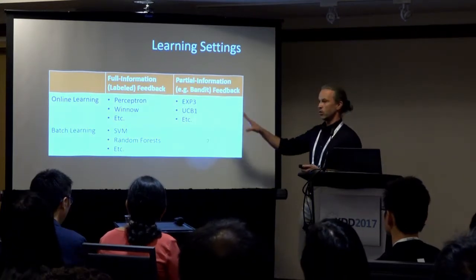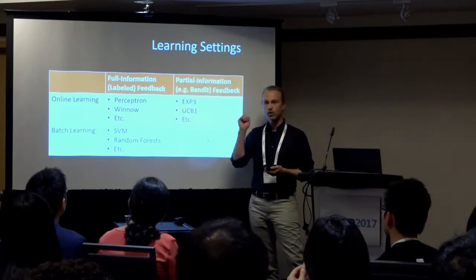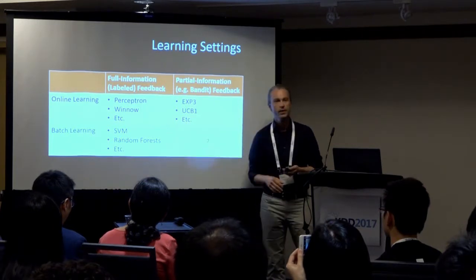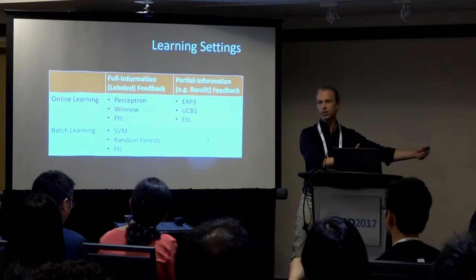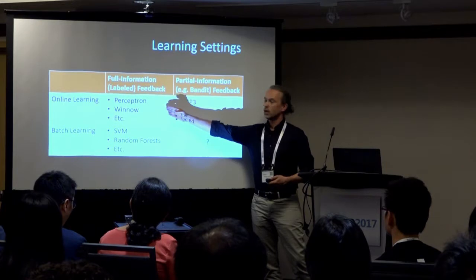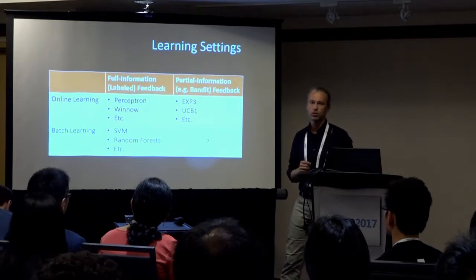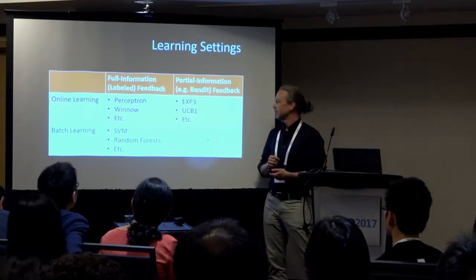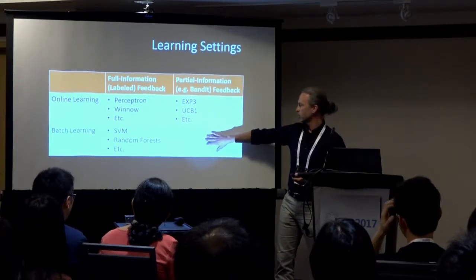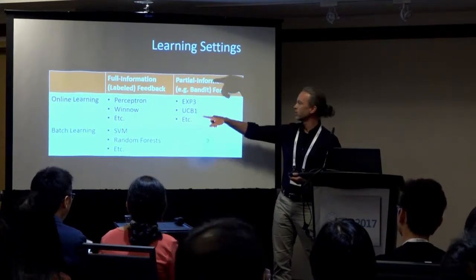If I think about machine learning at a very high level, we can do online learning where we interactively query things with interactive experimental control, or batch learning where we simply have a batch of data and can't get more. We also have full information learning where we get the complete loss function, versus partial or bandit feedback where we only observe partial feedback on the loss. Three cells of this table are very well explored. What we're going to explore in this talk is batch learning with bandit feedback.